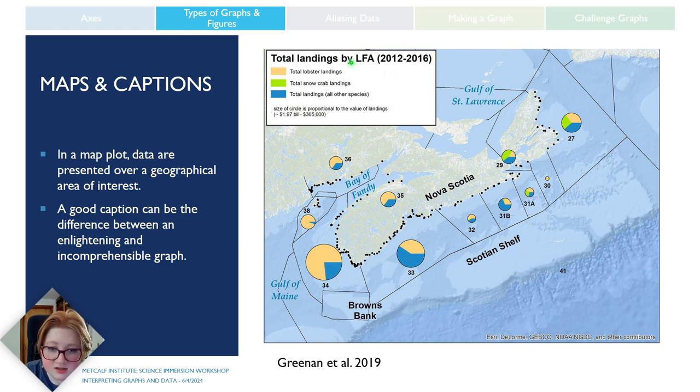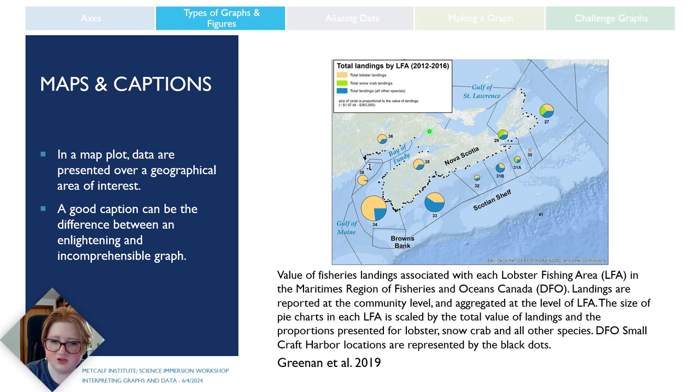Right here, we see that the size of the circles, which presumably are these pie graphs here, proportional to the values of landing, and that the yellow, green, and blue are responsible for depicting the lobsters, snow crabs, and other landings. That's great and all, but what are these boxes and what are these dots? It's a little bit still hard to understand with just the legend, so we have to break out the caption. As it says here, the values of fisheries landings associated with each lobster fishing area, which is what the LFA up here means, in the Maritimes Region of Fisheries and Ocean Canada. The landings are reported at the community level and aggregated at the level of LFA. The size of pie charts of each LFA, which are these circles that were mentioned before, is scaled by the total value of landings and proportions presented for lobster, snow crab, and all other species.